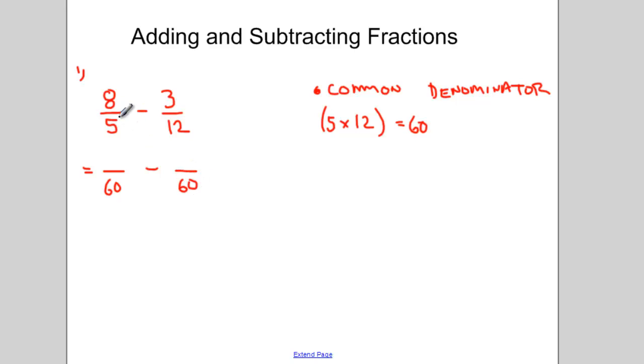If I'm changing the denominator of my first fraction, 8 fifths, into a denominator of 60, I need to remember what operation I'm doing. I'm multiplying 5 by 12 to make 5 equal 60. And what I do to the bottom of the fraction, I need to do to the top. So if I multiply 5 times 12, I also need to multiply 8 by 12, and I get 96. So the fraction 8 fifths and the fraction 96 over 60 are the same.